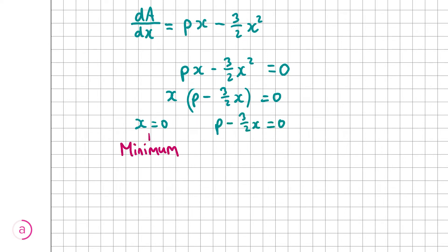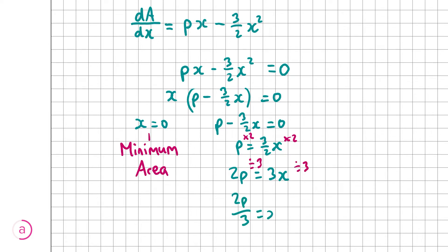x equals 0 is the minimum area, so we solve the right-hand side to find the maximum area. That gives p equals 3 over 2 x. Multiplying both sides by 2 gives 2p equals 3x, and dividing both sides by 3 gives x equals 2p over 3. This is the x value for the maximum area in terms of p.